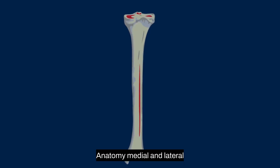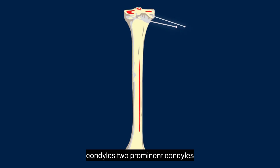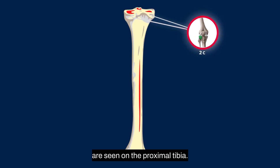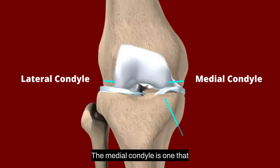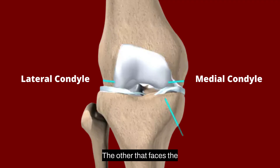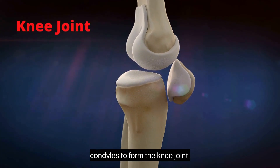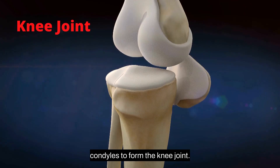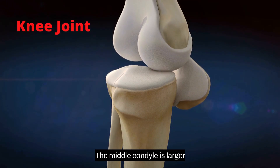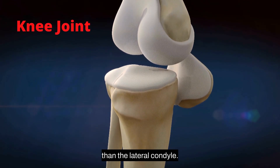Medial and lateral condyles: two prominent condyles are seen on the proximal tibia. The medial condyle is one that faces the midline of the body, while the other that faces the outside part of the body, or laterally, is referred to as the lateral condyle. It connects to the thigh condyles to form the knee joint. The medial condyle is larger than the lateral condyle.